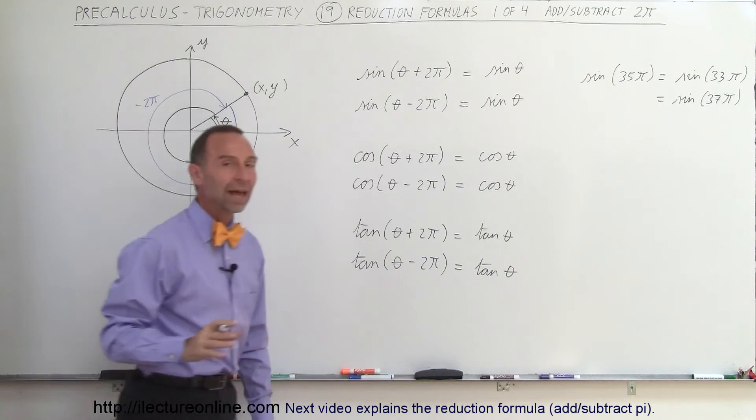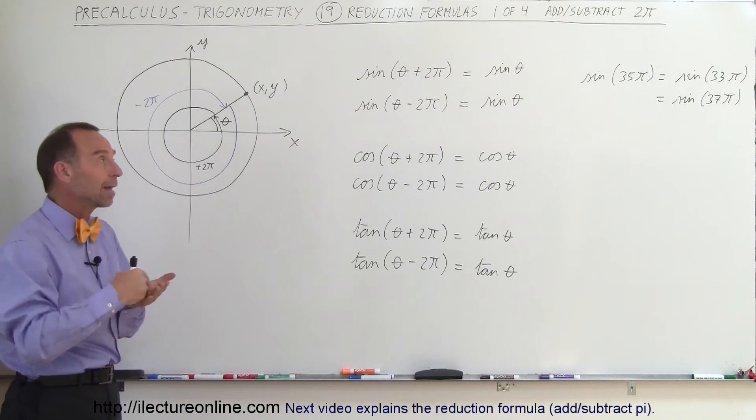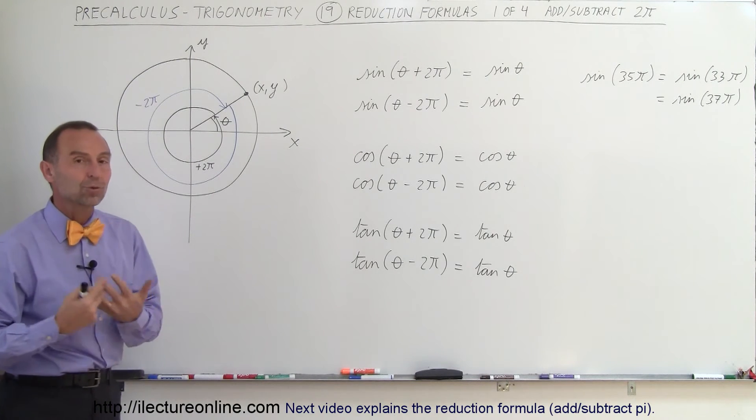So very simple. Whenever we have an angle, we can subtract or add 2π from that and we get the exact same trigonometric function.